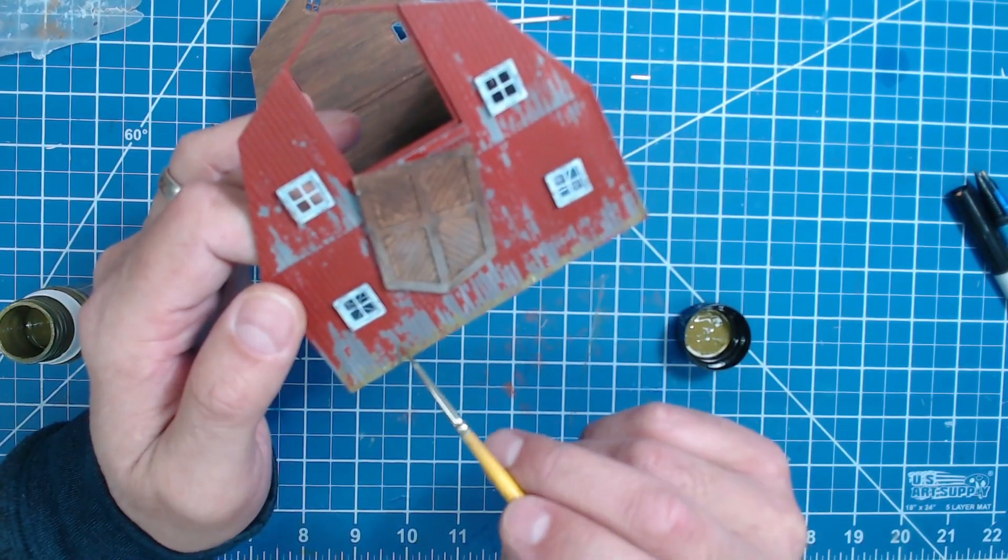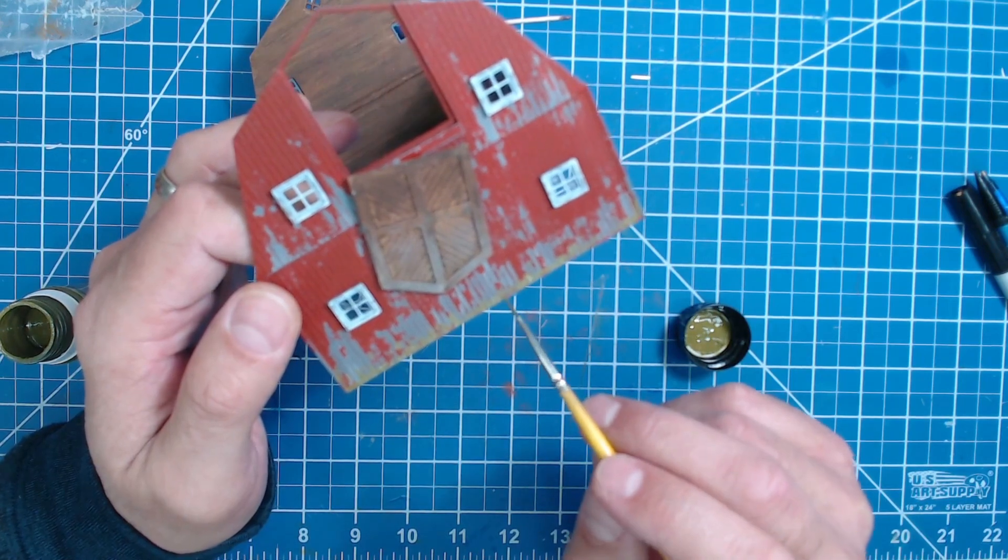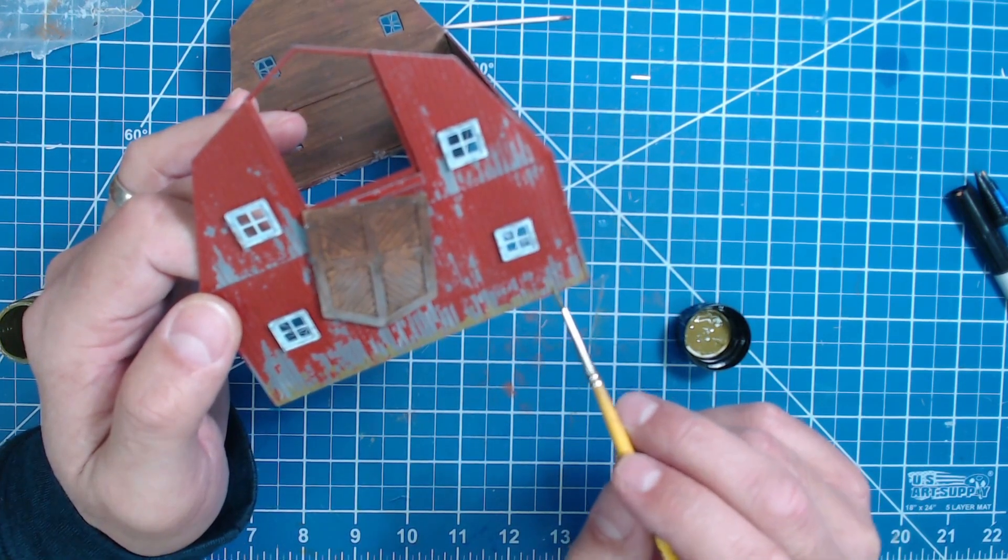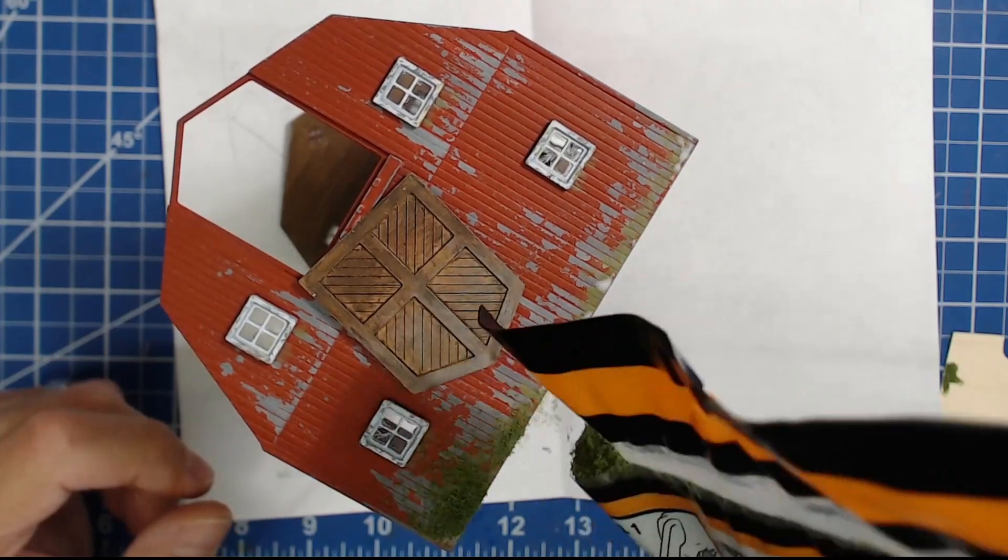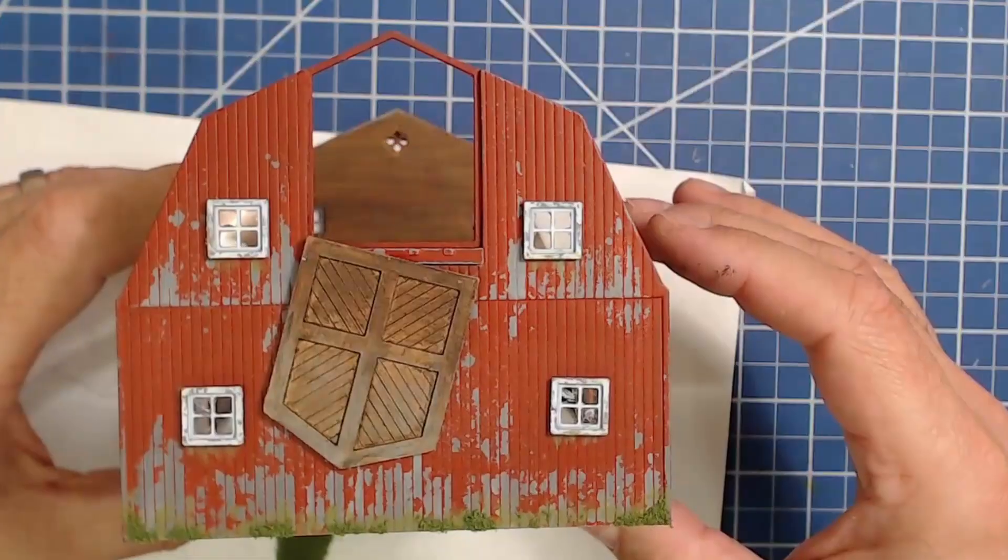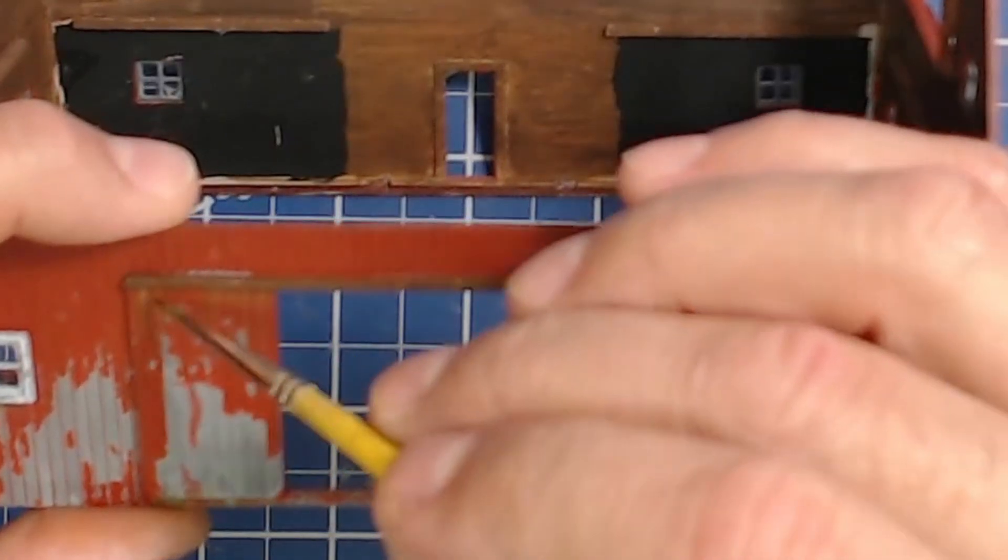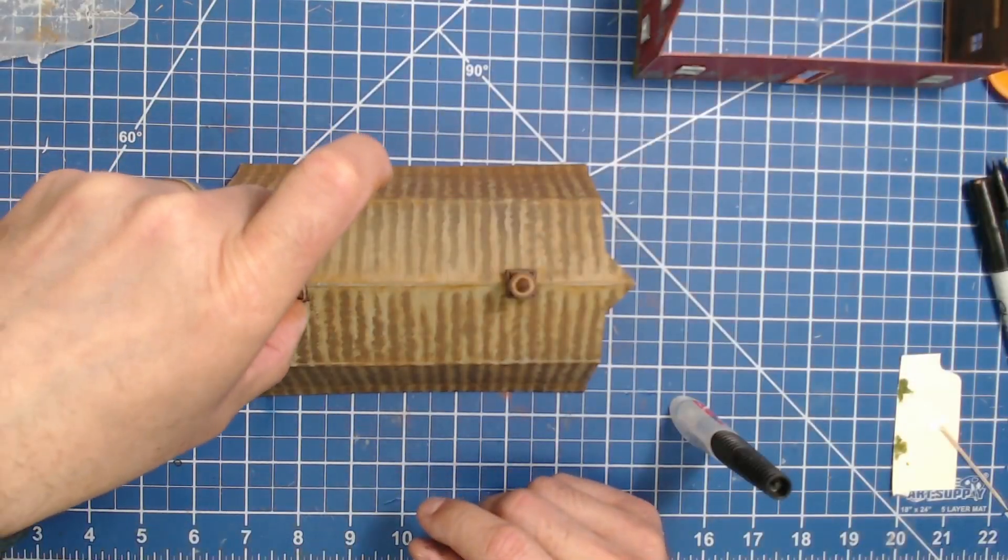A little algae, moss, and rust were next. Algae was added using some AK Interactive slimy grime, this time concentrating on the north side. Next, some tacky glue and fine turf added a little moss on the bottom of the boards. Then some rust streaks were added from the metal parts. A little superglue and the roof vents are attached.